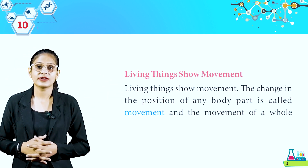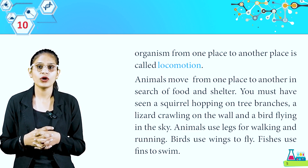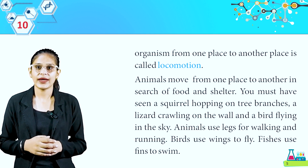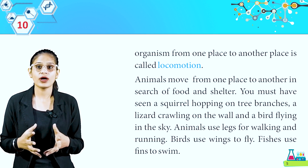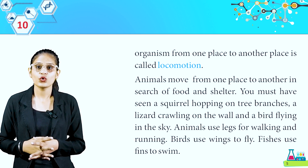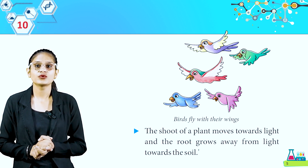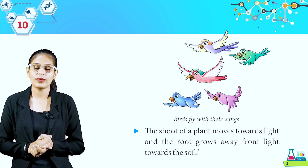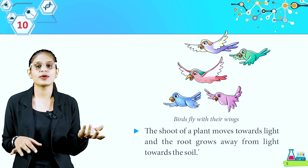Living things show movement. The change in the position of any body part is called movement, and movement of a whole organism from one place to another is called locomotion. Animals move from one place to another in search of food and shelter. You must have seen a squirrel hopping on tree branches, a lizard crawling on the wall and a bird flying in the sky. Animals use legs for walking and running, birds use wings to fly, fish use fins to swim. The shoot of a plant moves towards light and the root grows away from the light, towards the soil. If a whole organism moves, that is locomotion — it's a different type of movement.